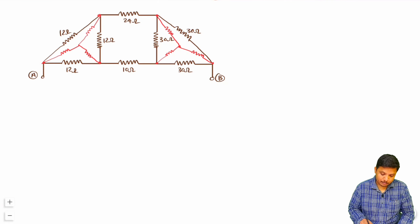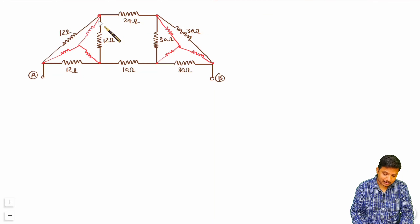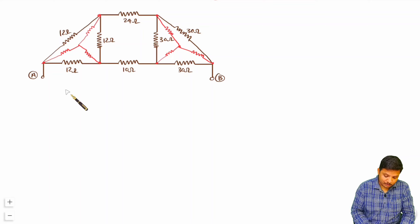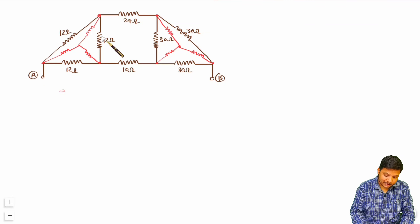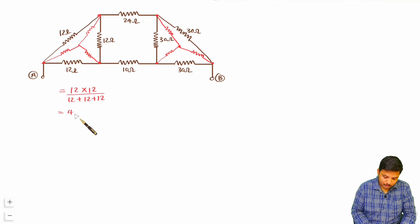If you make this delta into star you can have further calculation. For delta to star conversion, all we need to do is calculate each star resistor as the multiplication of adjacent resistances of the delta divided by all three resistances of that delta. So that is 12 into 12 divided by 12 plus 12 plus 12, which is 12 divided by 3, giving 4 ohm.